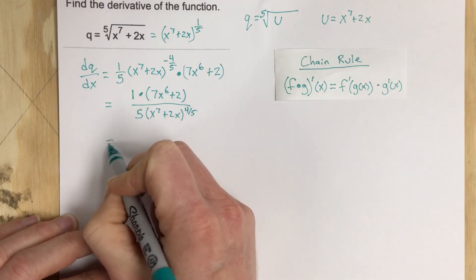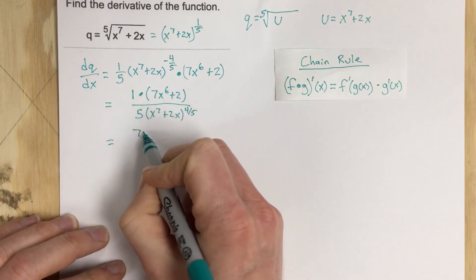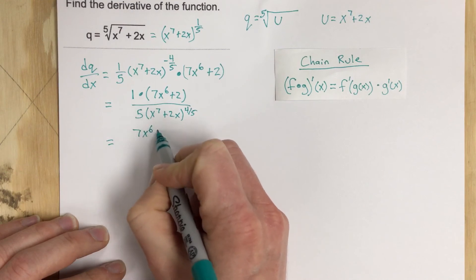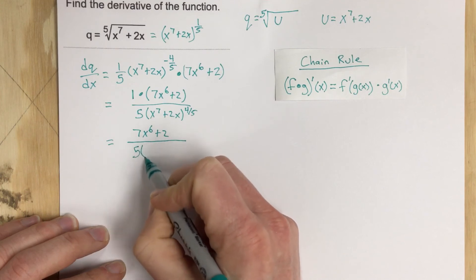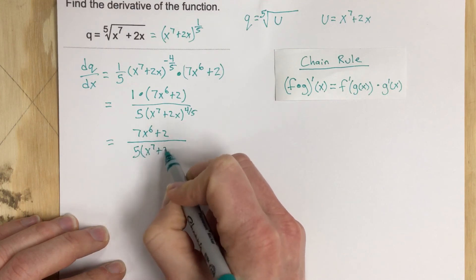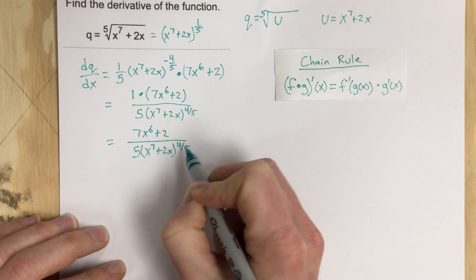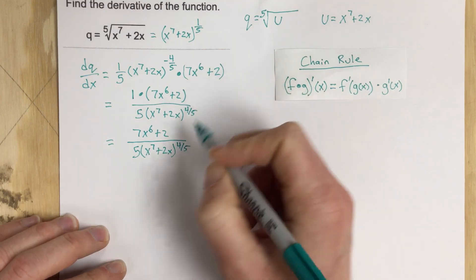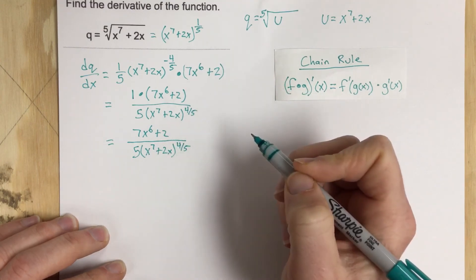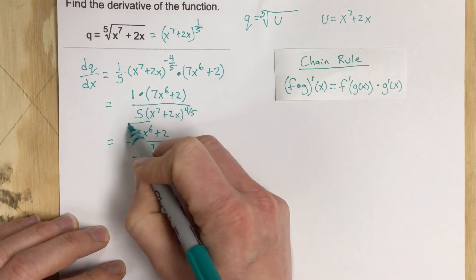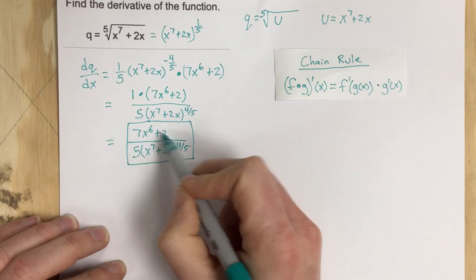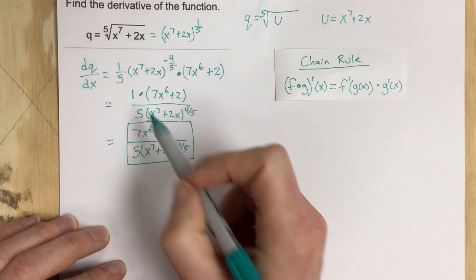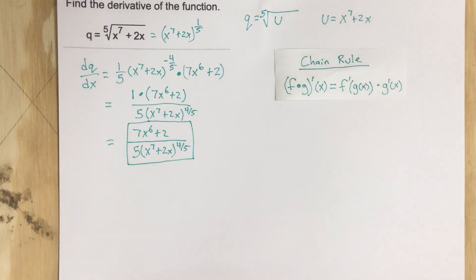So then we can rewrite this as 7X to the sixth plus 2, when we distribute that 1 it doesn't change anything, over 5 times X to the seventh plus 2X to the four-fifths. Anytime I get a fractional exponent that's not one-half, I'll probably just leave it as so, it's more functional that way anyway. So this is the derivative for Q equals the fifth root of X to the seventh plus 2X, using the chain rule.